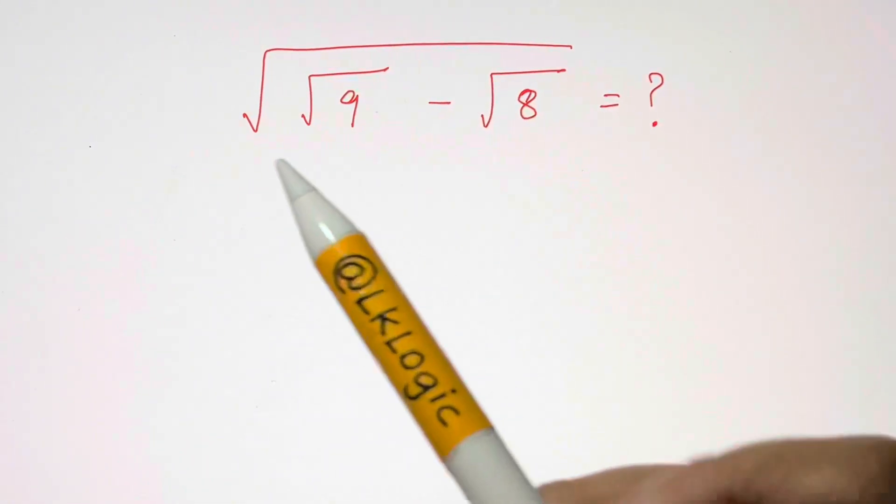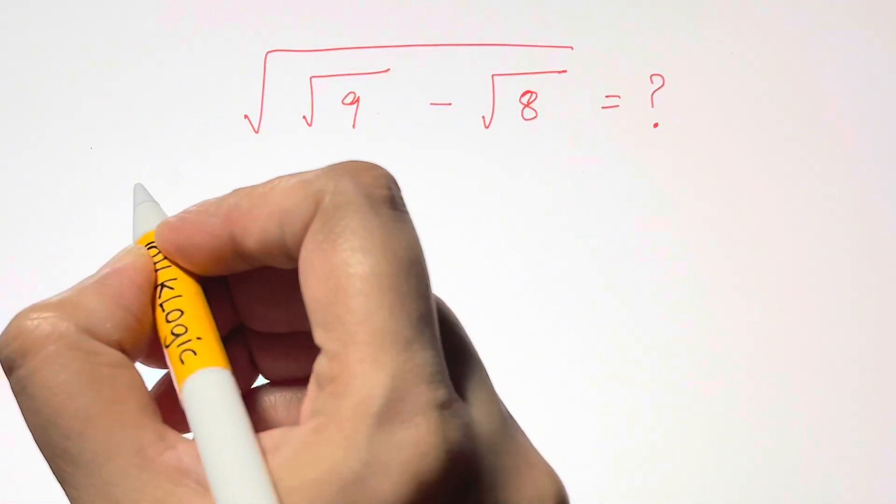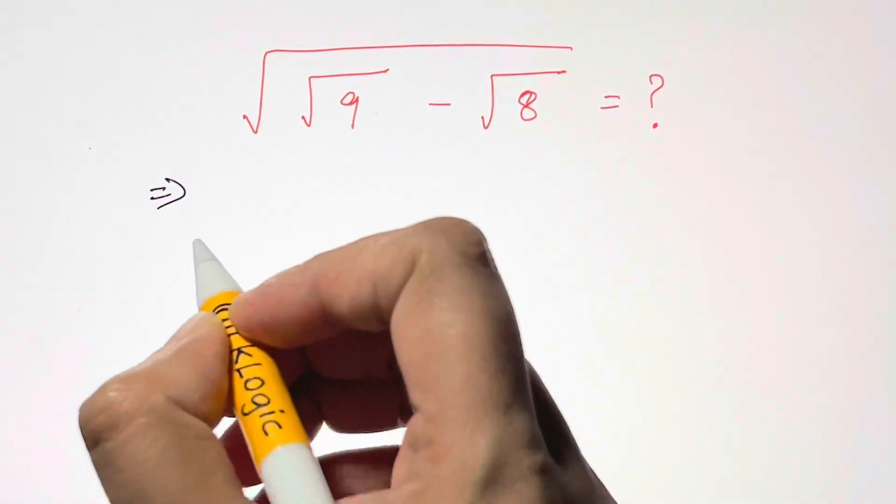Hi guys, here we have an interesting radical problem and how I'm going to solve this. We are just going to rewrite the numbers under the root.